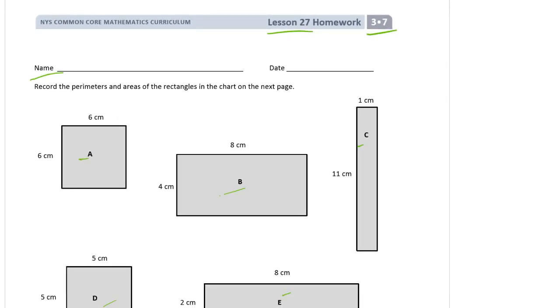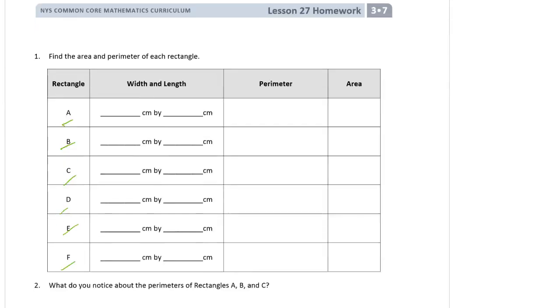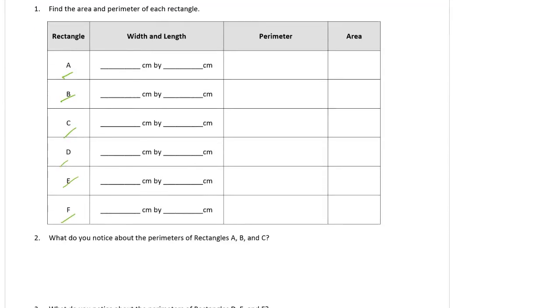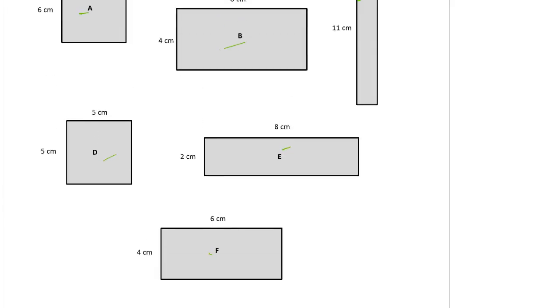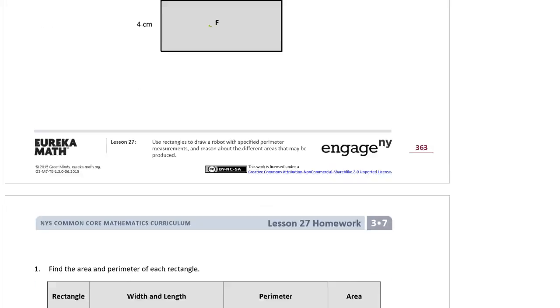A is a 6 by 6 square. So on the next page, A is 6 by 6. And then once I have all those written down, I can figure out the perimeter and the area. B is 8 by 4.